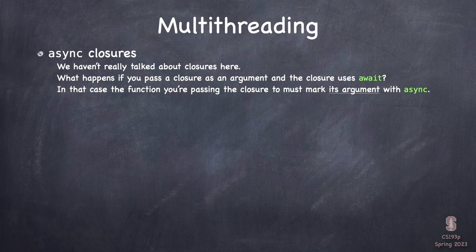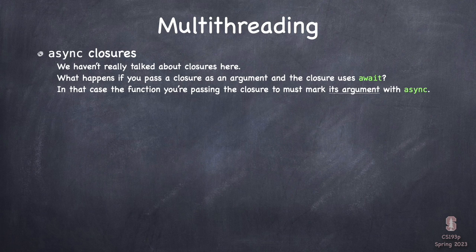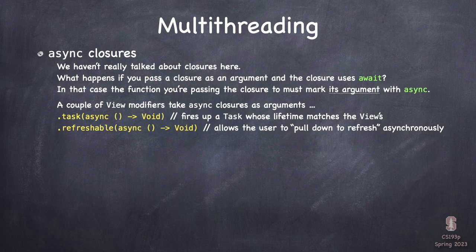What about closures? Closures can only have suspending things — they can only be async when passed to a function that marks its closure argument as async. Functions that take closures that are able to suspend have to declare that they're willing to have that closure be suspended. If you're passing a closure to a UI thing, you don't want the UI to get blocked because you passed a closure with a suspension in it. There are some view modifiers that take async closures.